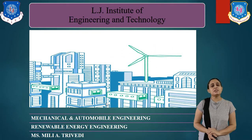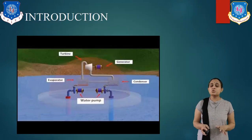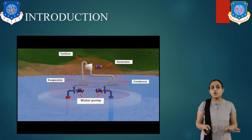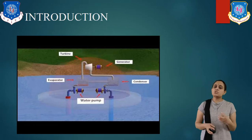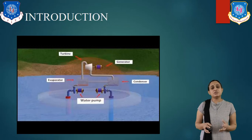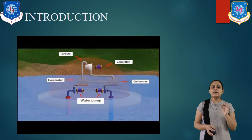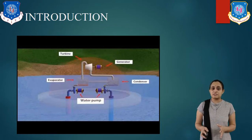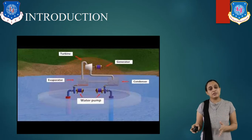Let us start with an introduction. As you all know, ocean covers nearly 70% of earth's area. All the oceans are connected with each other. The oceans of the earth serve many functions, especially affecting the weather and the temperature. The oceans of the earth have practically unlimited energy. The energy from the ocean can be harvested in three different ways: ocean thermal energy conversion, tidal energy, and wave energy.